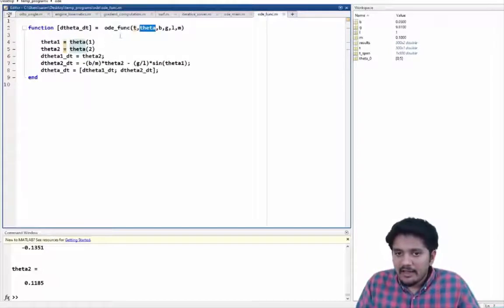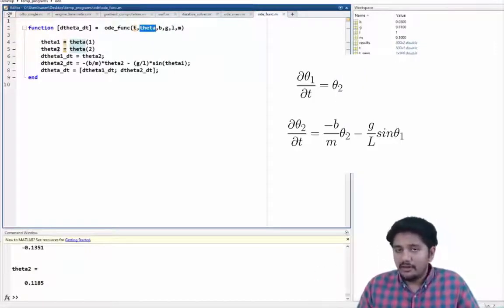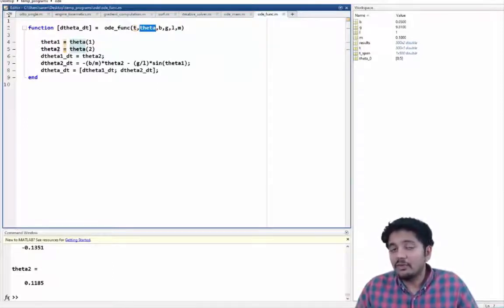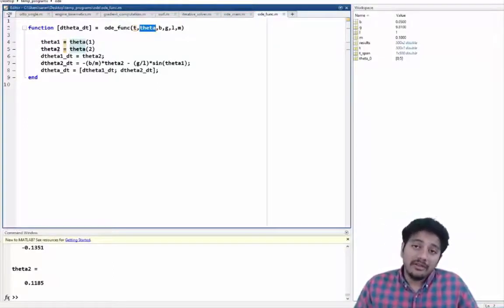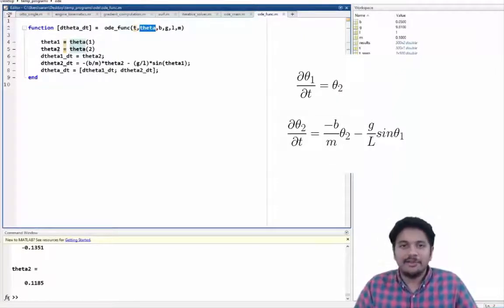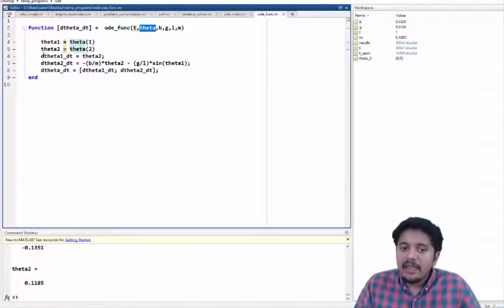And then inside that what I am doing is I am defining theta 1 and theta 2. So if you remember theta is our solution array. When we did the derivation I basically clubbed theta 1 and theta 2 into a variable called theta. So the first value theta 1 is going to be theta 1 and theta of 2 is going to be theta 2, which is what I have defined in the first two statements.